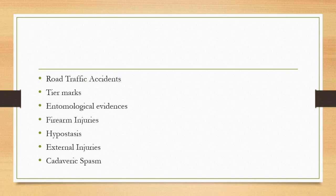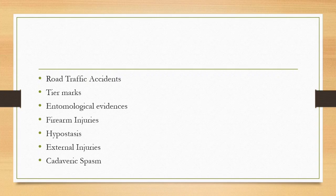Road traffic accidents are very important to examine to understand the cause of death by assessing whether the injury was enough to cause death. Tire marks on the clothes can indicate a hit-and-run case, allowing side-by-side comparison of tire mark patterns. Entomological evidence is especially helpful in determining the time since death. Firearm injuries are examined to determine the cause of death, and gunshot residue is a very important part of that examination. Hypostasis, also known as postmortem staining, is found in the dependent parts of the body in contact with the ground and is indicative of time since death. In cases of carbon monoxide poisoning, we find a cherry red color hypostasis.